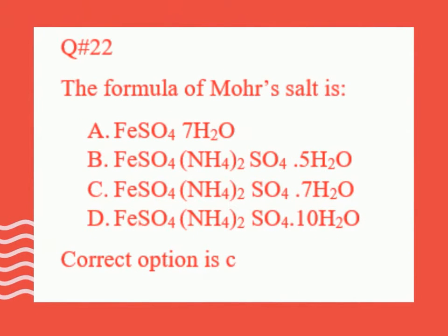Question number 22. The formula of Mohr's salt is: A. FeSO4·7H2O. B. FeSO4·(NH4)2SO4·5H2O. C. FeSO4·(NH4)2SO4·7H2O. D. FeSO4·(NH4)2SO4·10H2O. Correct option is C.